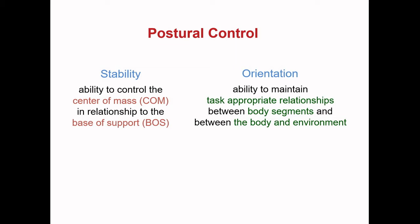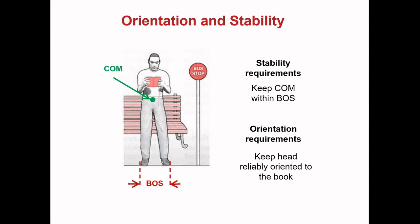Postural control involves controlling the body's position in space for dual purposes. The first purpose is stability, which refers to the ability to control the centre of mass in relationship to the base of support. Orientation refers to the ability to maintain a task-appropriate relationship between the segments of the body or between the body and the environment. A simple example of these dual purposes is what you're doing while watching this video: as you sit in your chair, you're regulating your posture to ensure you don't fall out, and also to maintain a steady orientation of your eyes relative to the screen.